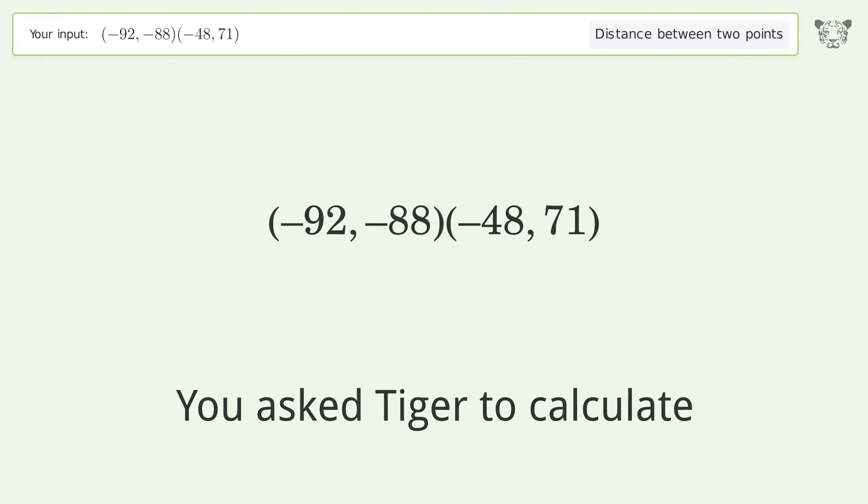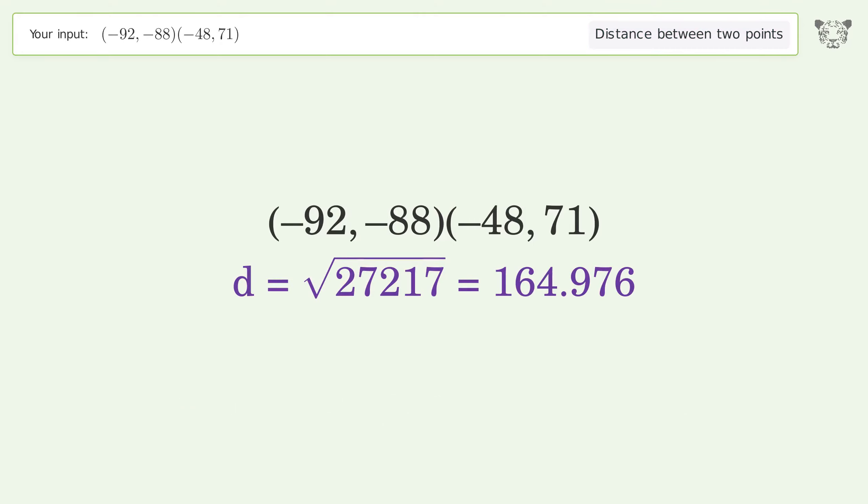You asked Tiger to calculate the distance between two points. The distance between the two points is the square root of 27217, or 164.976.